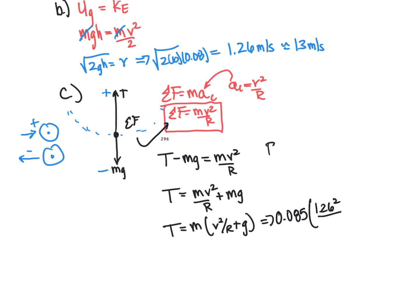And the radius is going to be the length. So the radius in this case will be equal to the length of our string, which is 1.5 meters plus 0.085. And that gives us right around 0.94 newtons. So 0.94 newtons.